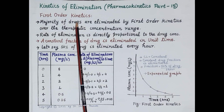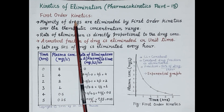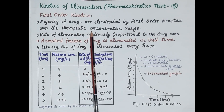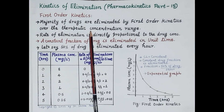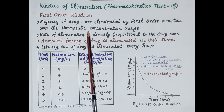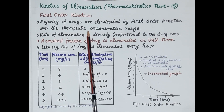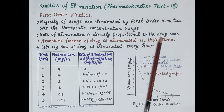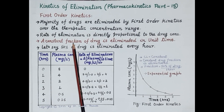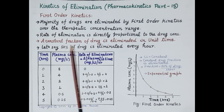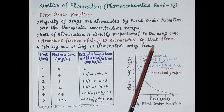Let's first talk about the elimination of drugs by first order kinetics. The majority of drugs are eliminated by first order kinetics over the therapeutic concentration range. If a drug exceeds this therapeutic range and the concentration becomes too high, it can start getting eliminated by zero order kinetics. But here, let's consider that the dose is within the therapeutic range. In first order kinetics, the rate of elimination of drug is directly proportional to the drug concentration. Very importantly, a constant fraction of drug — not a constant amount — is eliminated in unit time.